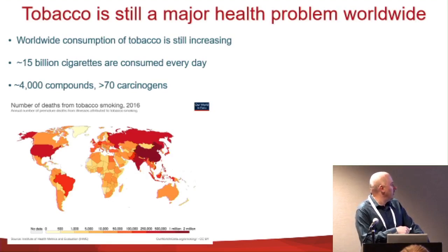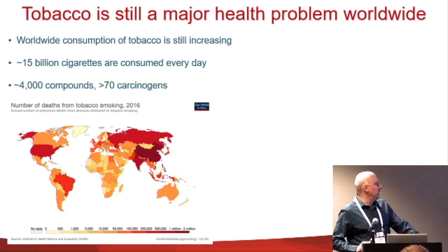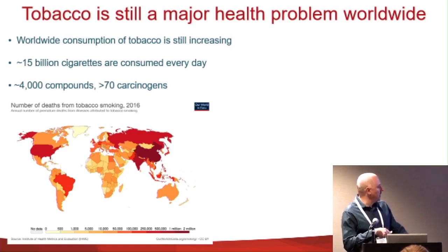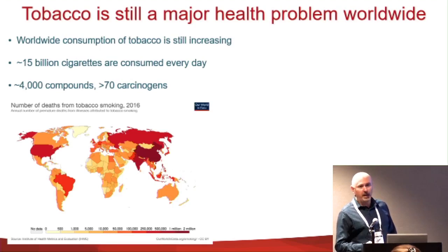There are about 4,000 compounds in tobacco smoking, and greater than 70 of them are established carcinogens. This map shows the number of deaths by tobacco smoking in 2016 all over the world, and this is not corrected for population size.